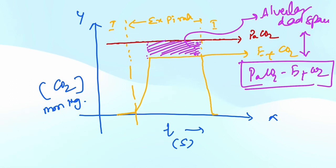So what is the normal value of the gradient? Generally in healthy individuals this gradient ranges from 5 to 10 millimeters of mercury. So what is the significance of this gradient?